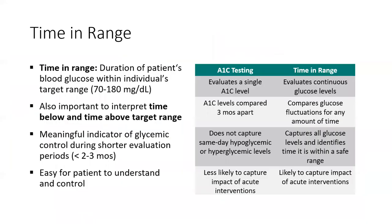Let's look at the time in range concept and how it differs from HbA1c testing. HbA1c evaluates a single A1c level, whereas time in range evaluates continuous glucose levels. A1c can be compared three months apart, while time in range compares glucose fluctuations for any period. HbA1c does not capture same-day hypoglycemic or hyperglycemic levels, but CGM daily profiles capture all glucose levels — when hypoglycemia and hyperglycemia are occurring. HbA1c is less likely to capture the impact of acute interventions, whereas CGM time in range captures all acute interventions.